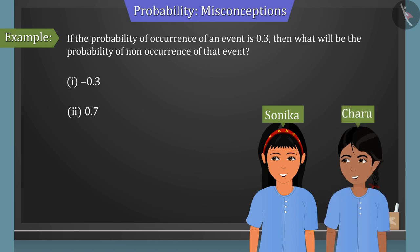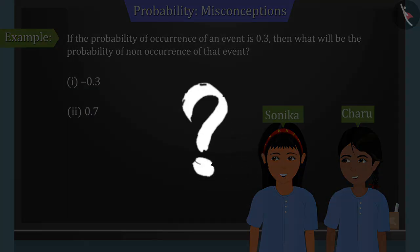Sonika and Charu select options 1 and 2 respectively. Minus 0.3, 0.7. Can you tell whose answer is correct and why?